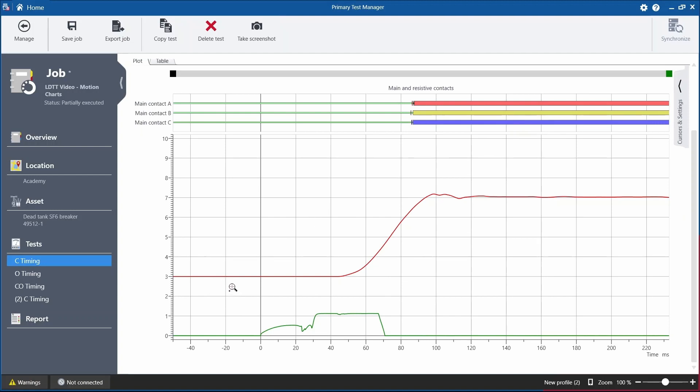Below that, we have our travel curve, which is showing how the contacts are traveling through from one position to the final resting position. And at the bottom, we have our coil current, which is the current that's being induced in the closed coil for this measurement.